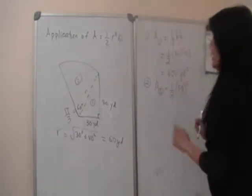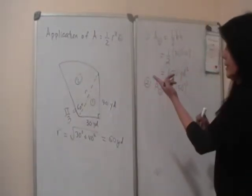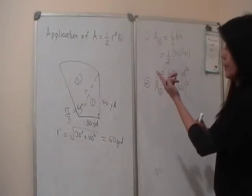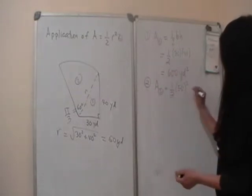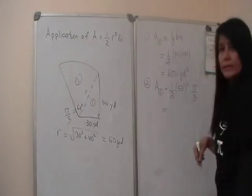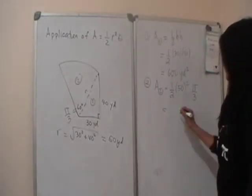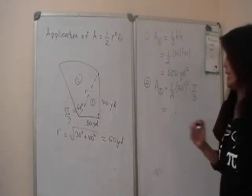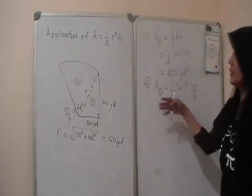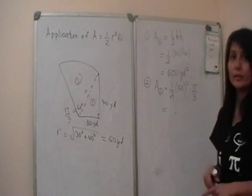You can multiply that by pi over 180 to get that answer. So you just multiply this by pi over 3, and you get the answer. You can figure that out. So that's an application of your area of a sector formula.